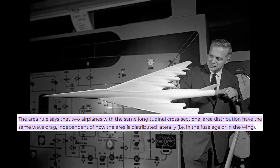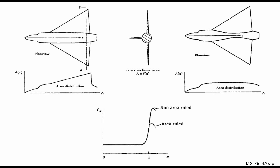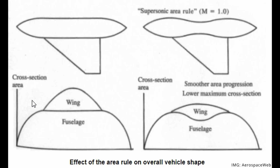Skybrary defines Whitcomb's area rule as, quote: the rule says that two airplanes with the same longitudinal cross-sectional area distribution have the same wave drag, independent of how the area is distributed laterally — for example, in the fuselage or wing. So in more basic terms, the area rule is a design principle that avoids dramatic changes in the cross-sectional area of a plane. You can see from this diagram how the cross-sectional area varies along the length of the plane, with contributions from both the fuselage and the wing. The area rule cuts down the cross-sectional area of the fuselage at the wing location and smooths over the change in cross-sectional area.